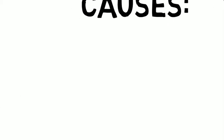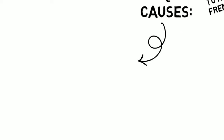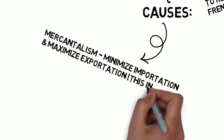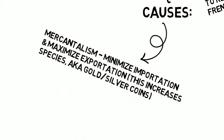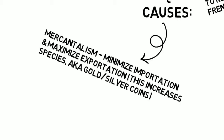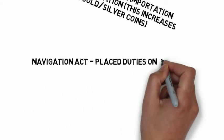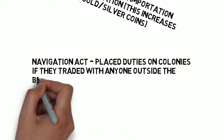England's strong belief in mercantilism also led to revolution. Mercantilists believed that a state's power was dependent on its ability to minimize importation and maximize exportation. Doing so would increase specie — specie is another word for gold or silver coins. Side note: tariffs and duties are synonyms for taxes.